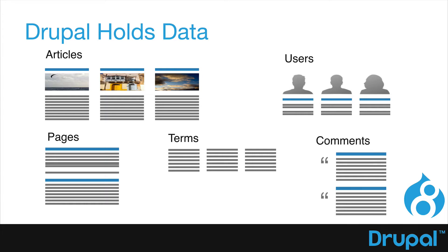We all know that Drupal holds data. There are different content types — you can have articles, basic pages, or you can create your own. There's a taxonomy system in Drupal, and we can add terms that categorize our content. But with Drupal 8, it can do so much more. We also have a user system, a comment system, and other pre-built systems that allow us to quickly build websites with really great structured content.